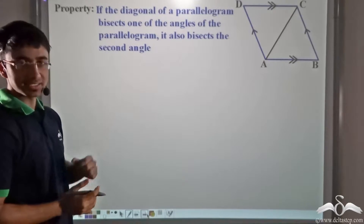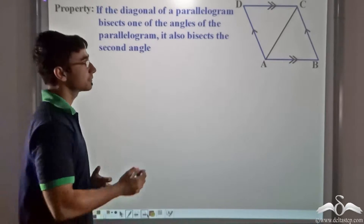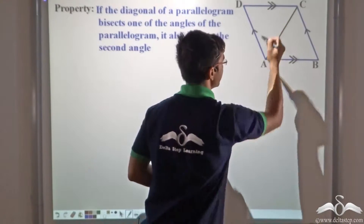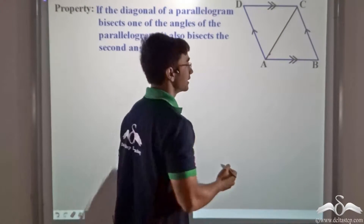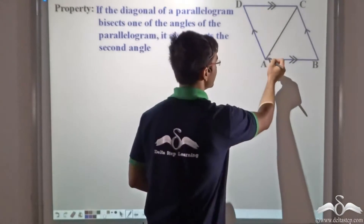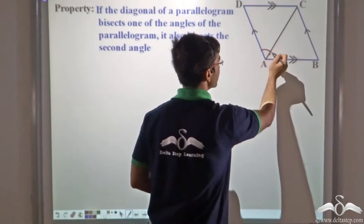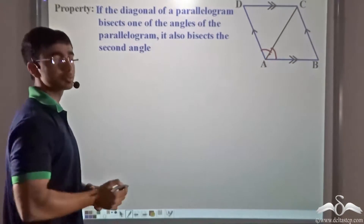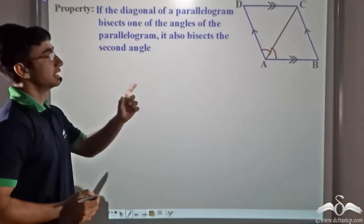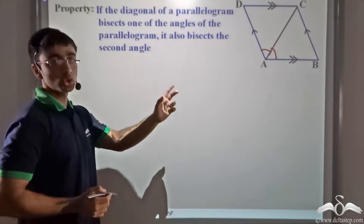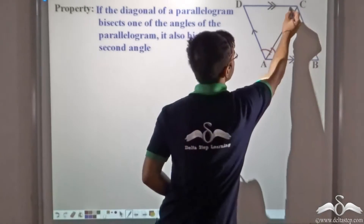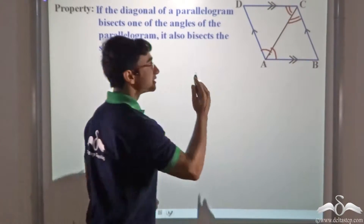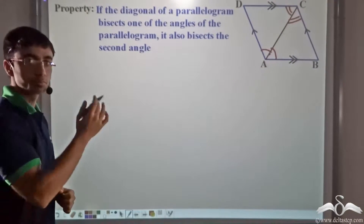In other words, if we are considering diagonal AC and we have been given that diagonal AC is bisecting angle A, it will also bisect angle C. This is the property that we have to prove.